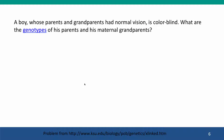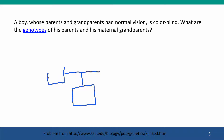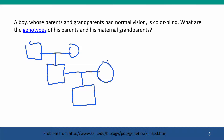Here's another problem, illustrated with a pedigree. We're told a boy whose parents and grandparents had normal vision — his father had a father and a mother, and his mother had a father and a mother. We're told that this boy is colorblind, but that everybody else in the family has normal vision.